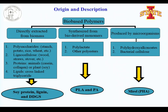There are three different categories to obtain bioplastic material: directly extracted from biomass — we have selected soy protein, lignin, and DDGs for our project; by polymerization of monomers from biomass, as in the case of PLA or polyamide; and by fermentation using microorganisms, for example PHA.